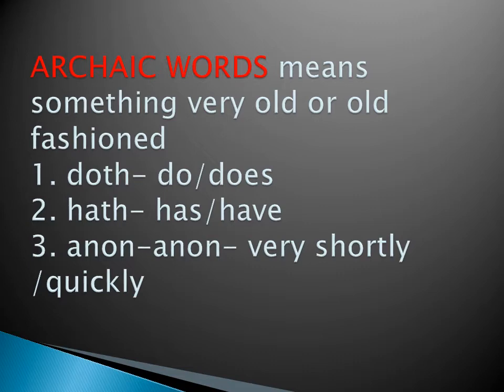Archaic words means something very old or old-fashioned — like old-fashioned costumes used by our grandmas or great-grandmas. Archaic words are words used in old literary works. There are three archaic words: the first is 'doth' — it means 'do' or 'does'; the second is 'hath' — it means 'has' or 'have'; and 'anon' means very shortly or quickly. These words were used in old literary books.